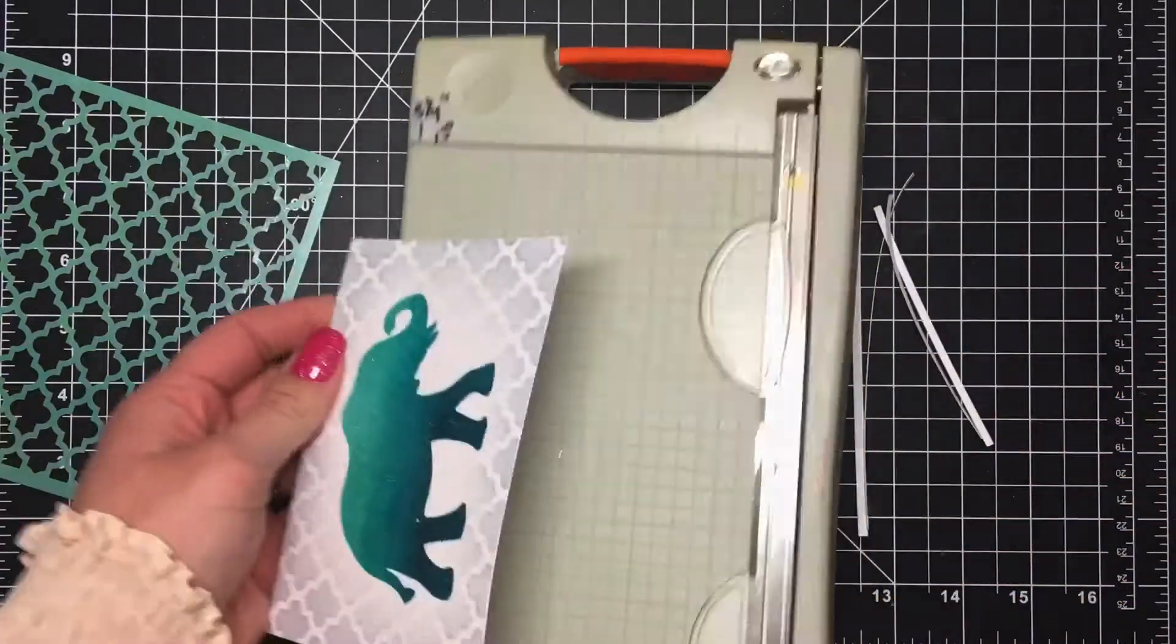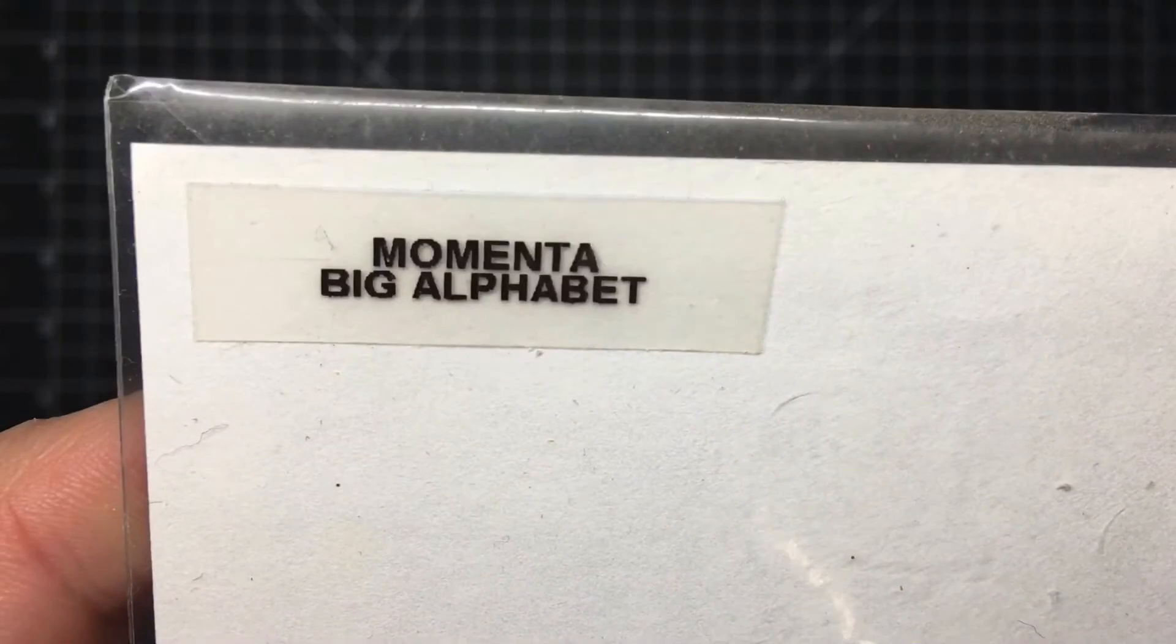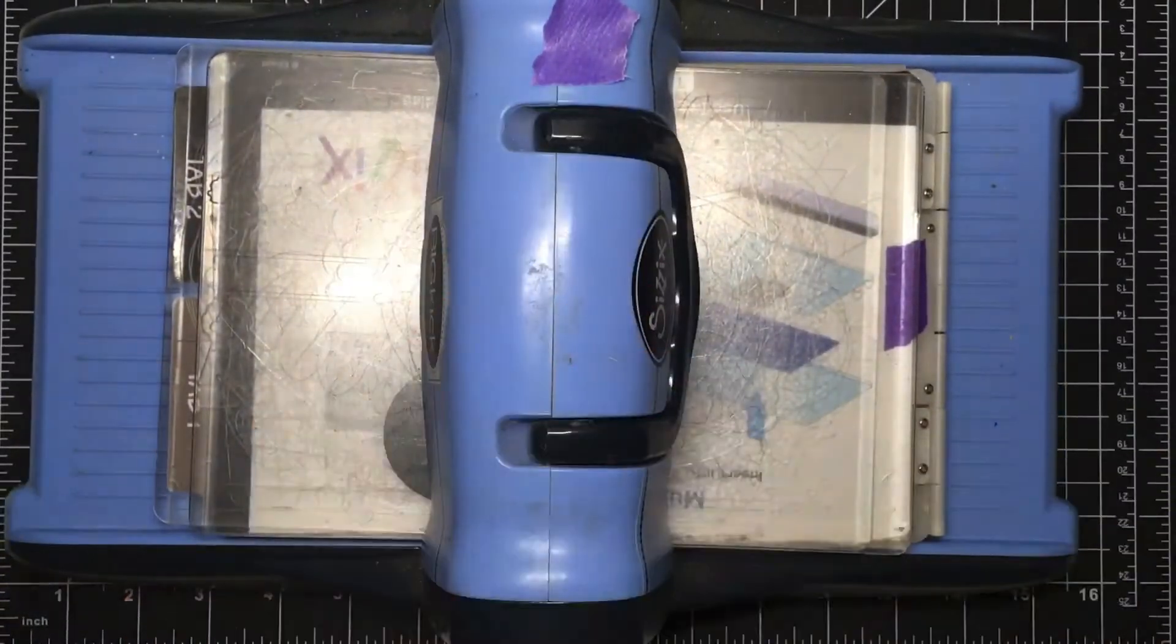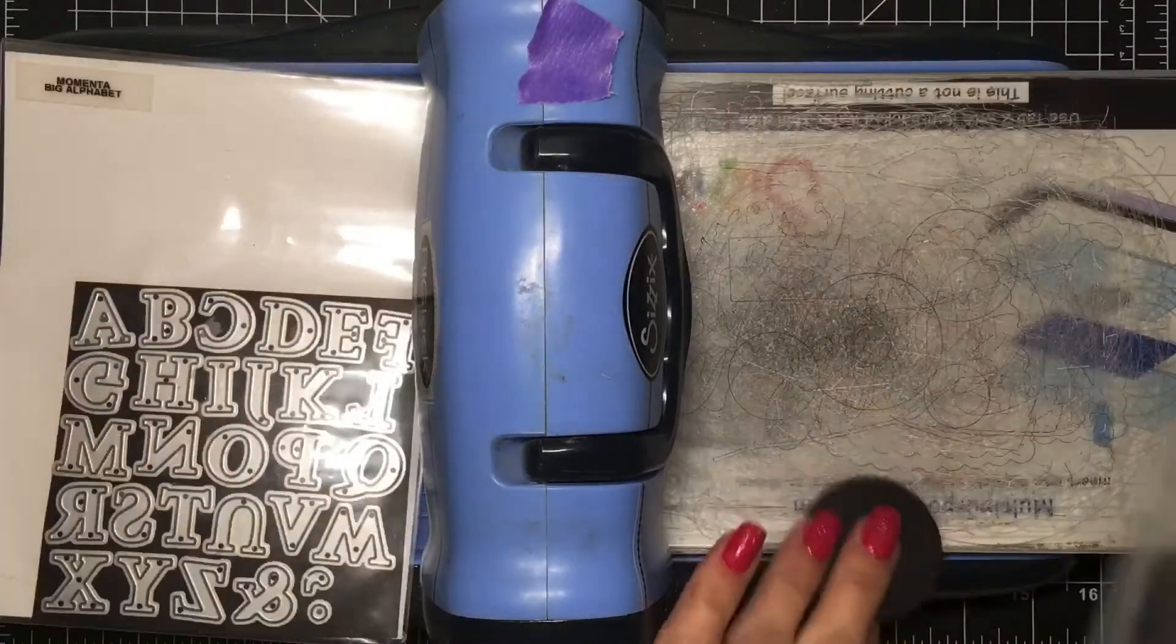I'm using a die set by Momenta, it's an alphabet die set and I will die cut the words big hugs out of some black cardstock.